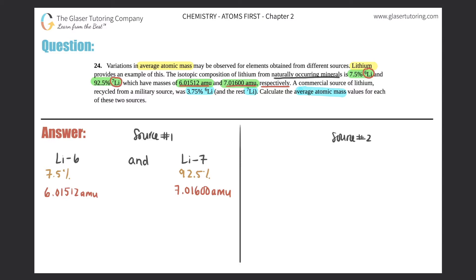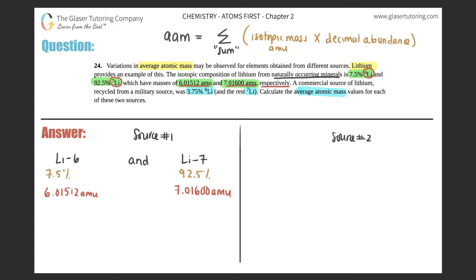We have to find the average atomic mass. Average atomic mass — AAM — is the sum of what you multiply your isotopic masses (the number in AMU) by the decimal abundance. I can't stress 'decimal' enough — you have to convert your percentages to their decimal equivalent. When you have a percent and want the decimal equivalent, you divide by 100 or move the decimal point two places to the left.